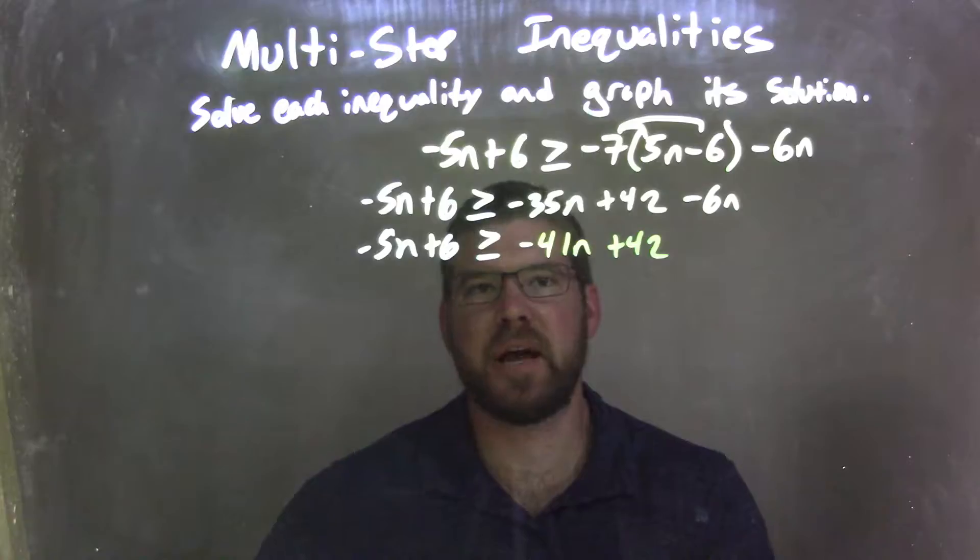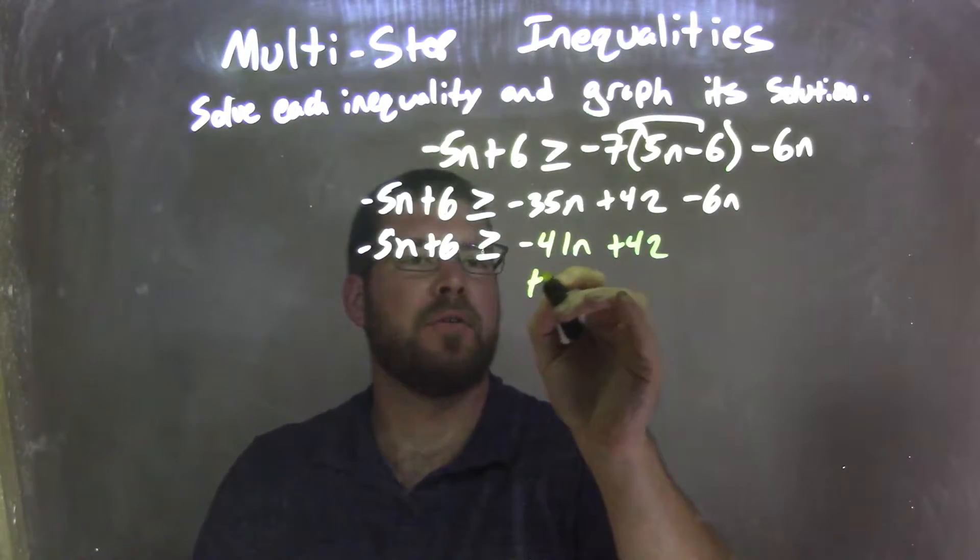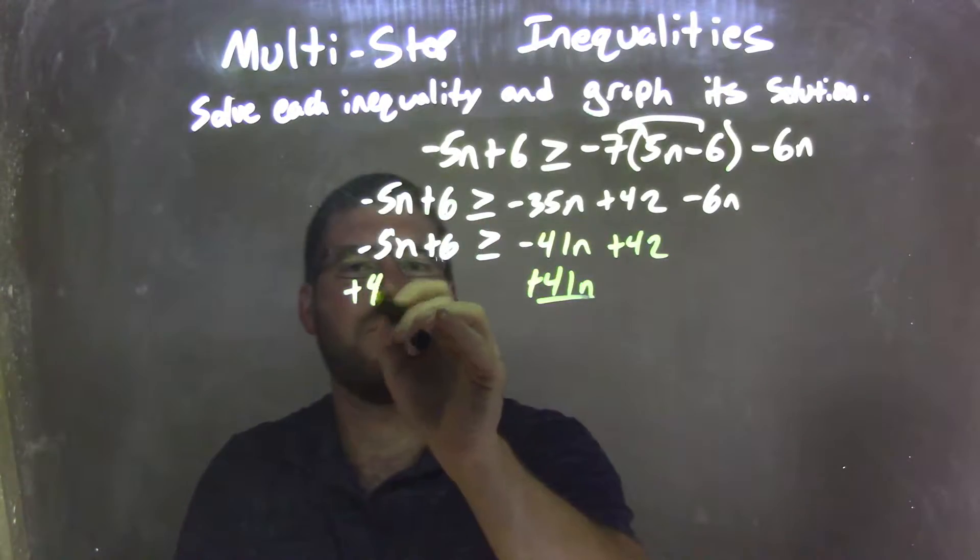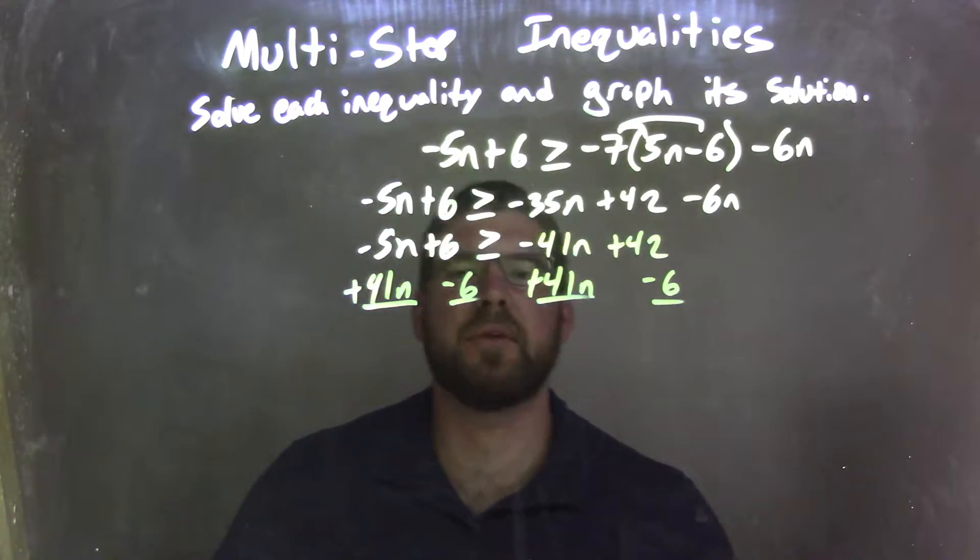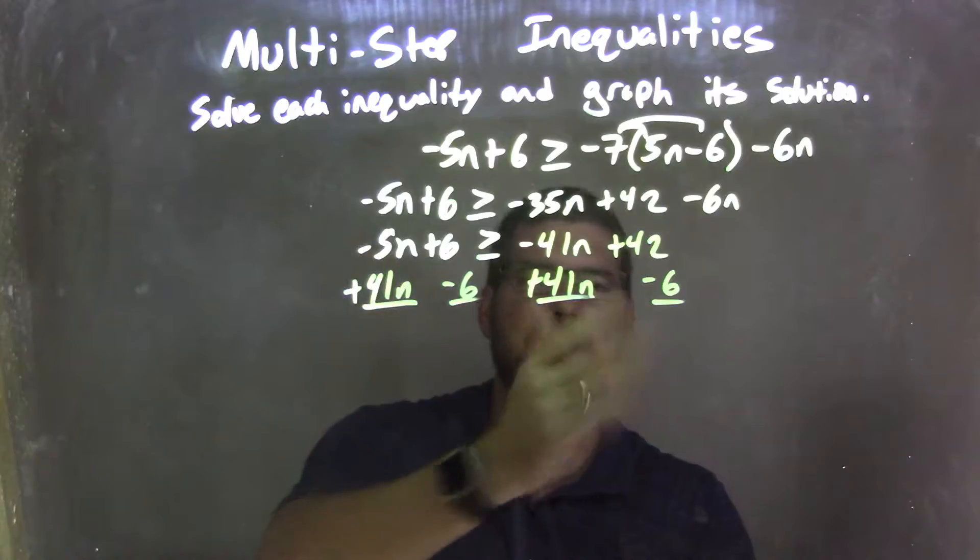So now let's bring our like terms together. I'm going to add 41n to both sides. Right here. Plus 41n. And I'm going to subtract 6 from both sides. Let's do both at the same time here. Bring my n to the left, my numbers to the right.